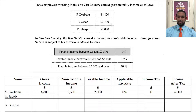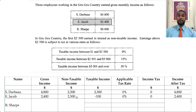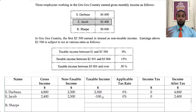E. Jacob is next. E. Jacob earns $2,400. The non-taxable income allowance is $2,500. So although you get a negative taxable income figure, we don't count it as negative — there's simply no taxable income. Therefore E. Jacob pays zero tax and keeps the full $2,400.